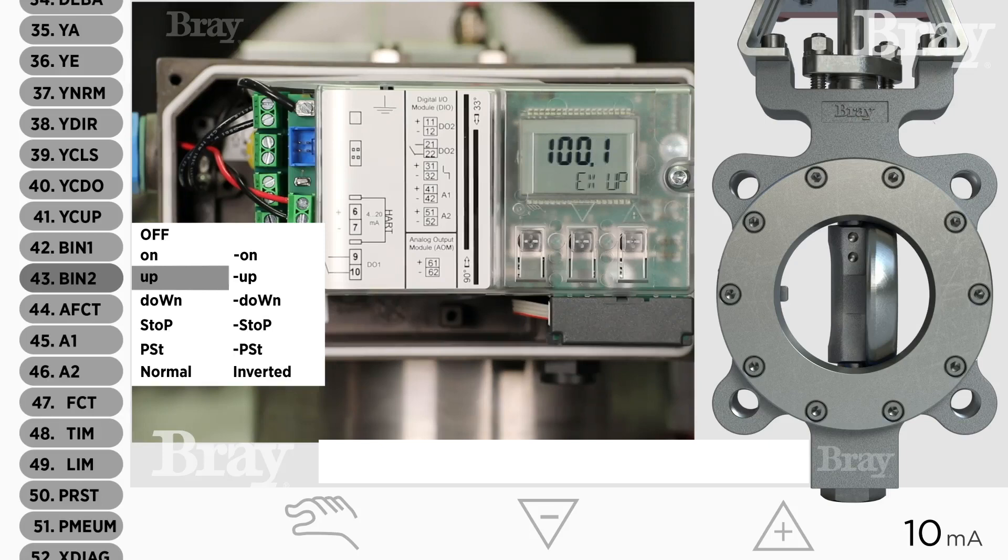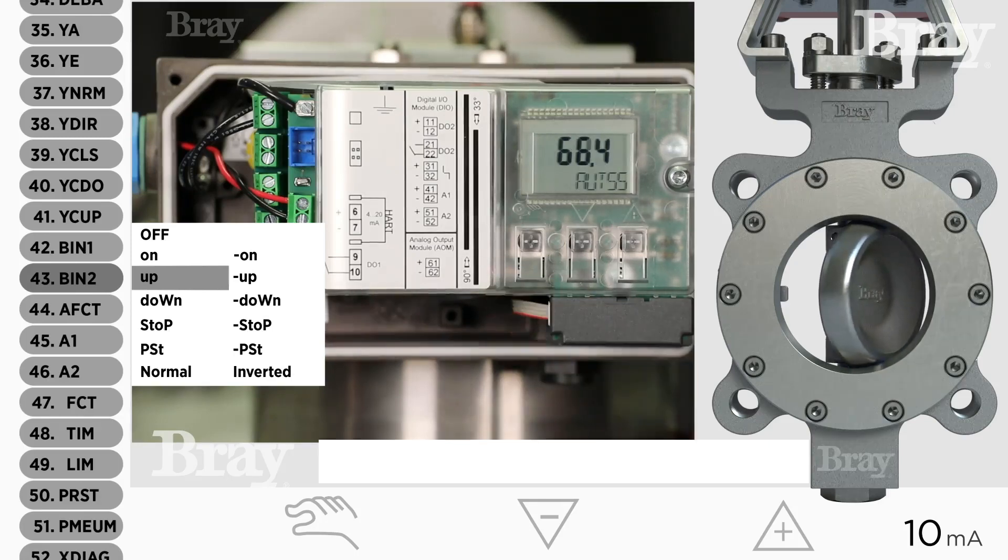Now, if we wanted to do the opposite, if we wanted to go to close, we can change that input. So that's the binary input off, and it goes back to loop power.